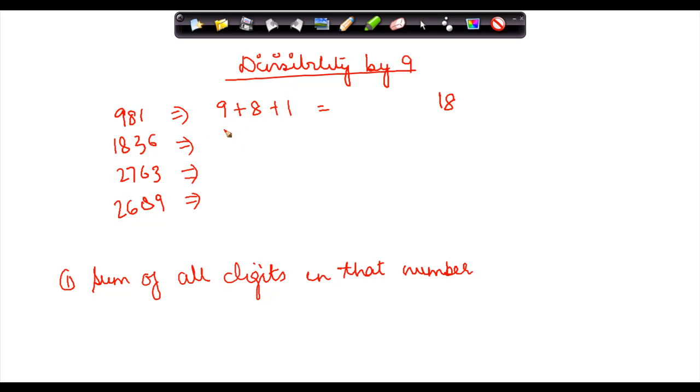1 plus 8 plus 3 plus 6, again it is 18. Now here, 2 plus 7 is 9 and 6 plus 3 is 9, again it is 18. 2, 6, 8, 9: 2 plus 6 plus 8 plus 9, this gives me 25. Now what I see is that all these three numbers are exactly divisible by 9, whereas this number is not divisible by 9.